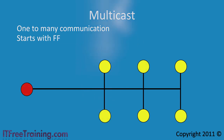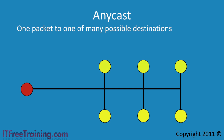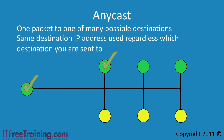The last type of address is anycast. Anycast is when one packet is sent to one of many destinations. For example, if you had the same service installed on many servers throughout your network, you would want the client to be directed to the nearest one. Using anycast, you can use the same destination IP address on each host and your routers will direct the client to the nearest server. To use anycast, your network needs to be configured to support it.